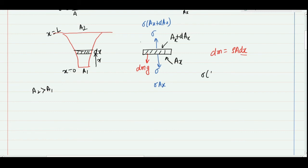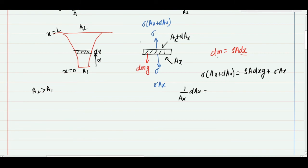Balancing forces in the vertical direction: the upward force is σ(Ax + dAx) and the downward forces are ρ·Ax·dx·g plus σ·Ax. After simplification, we get: (1/Ax)·dAx = (ρg/σ)·dx.